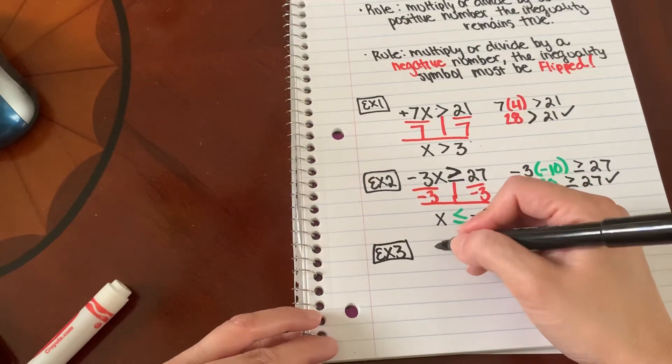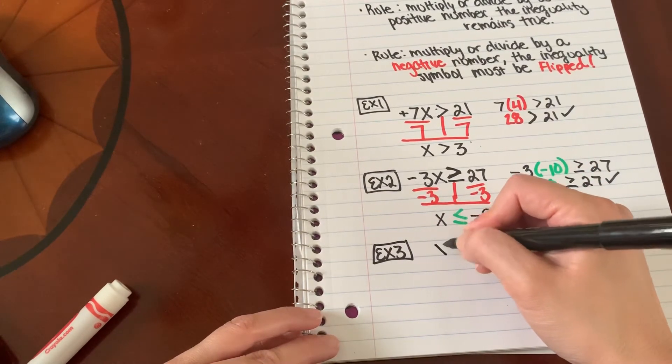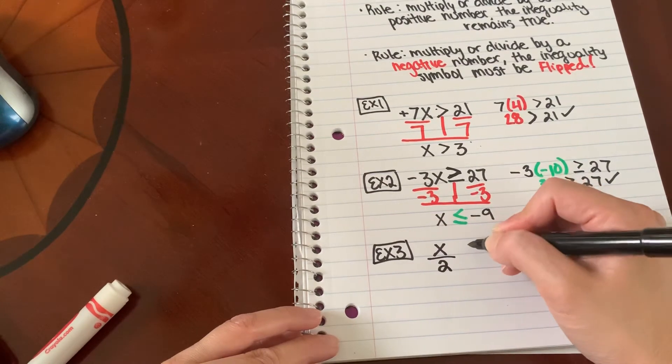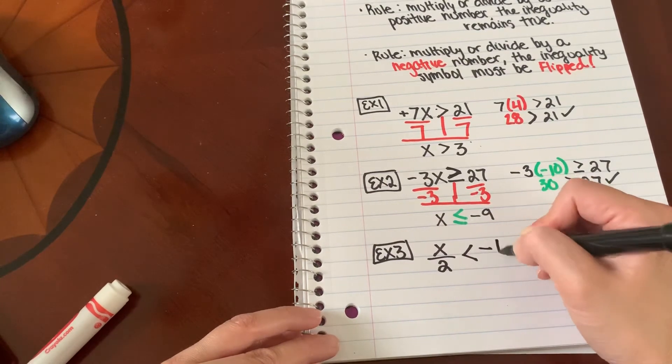Okay, let's do a division problem. So if I have x over 2 is less than negative 10, I'm going to go ahead and t-chart.